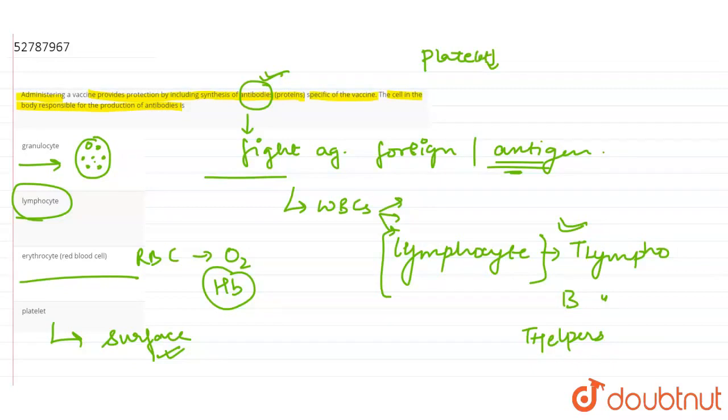Thik hai toh jo hamare platelets hai wo hamesha down hote hain whenever there is a fight between antigen and antibodies. Toh yahan par answer kya ban jata hai seedha seedha answer ban jata hai option B.